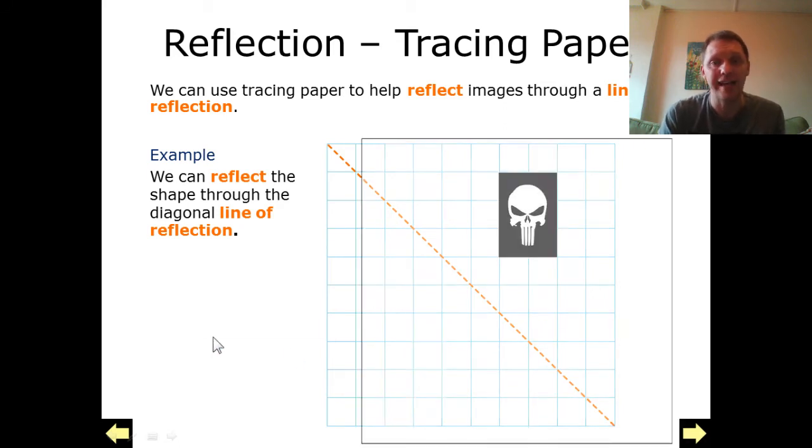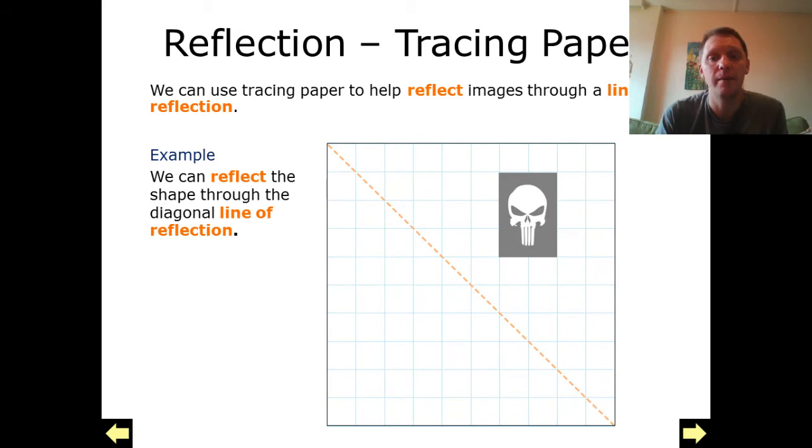What I'm going to do first is put tracing paper over my given problem. I'm going to draw the outline of my shape on the tracing paper, and also sketch my line of reflection on my tracing paper.